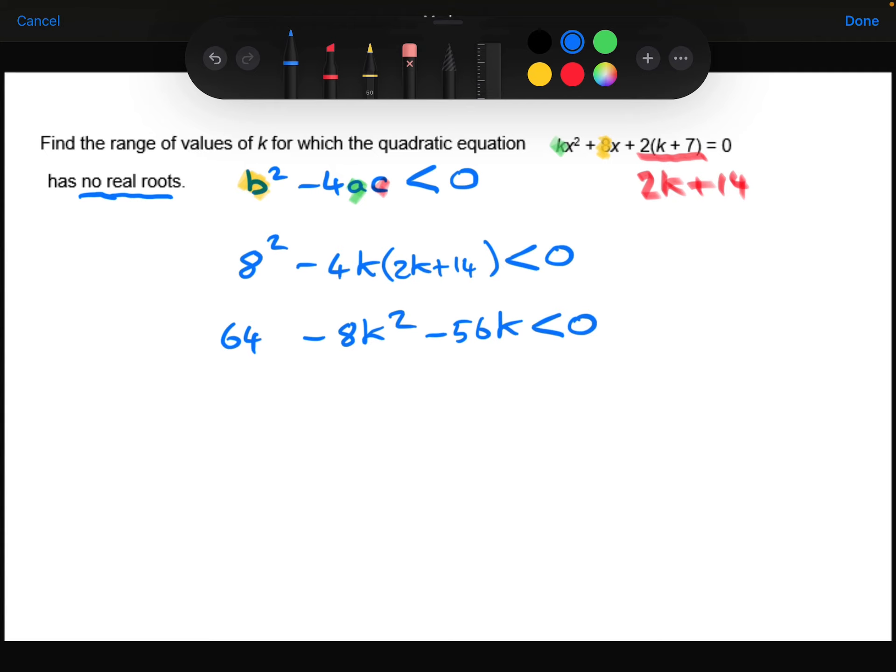I don't like the look of the minus 8k² there, so I'm going to add that to the other side. And whilst I'm also at it, I'm going to add the 56k to both sides, and I'm going to subtract the 64 from both sides.